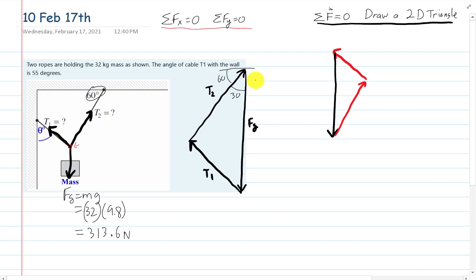So that makes this angle here 30. Now we have one of the angles in the triangle. Over here, where is that 60? That 60 is right here.